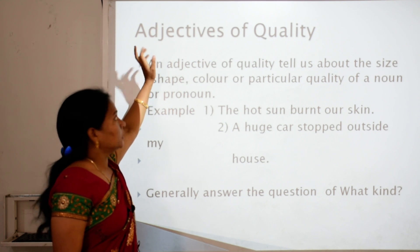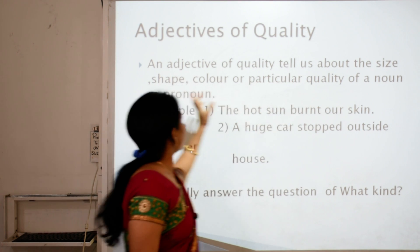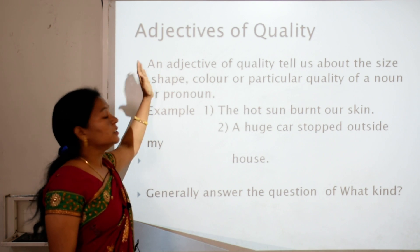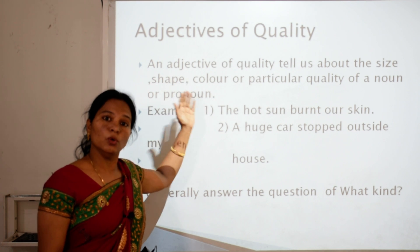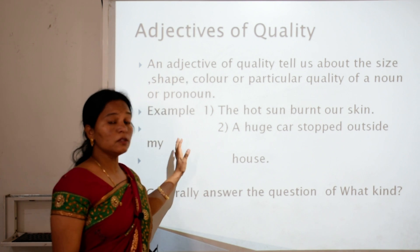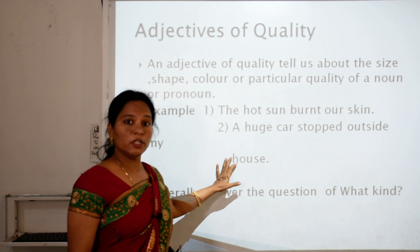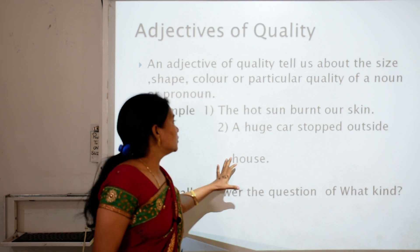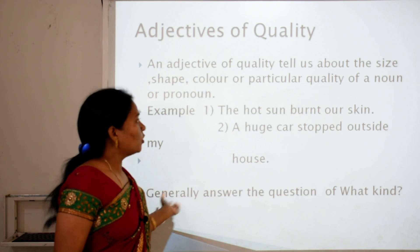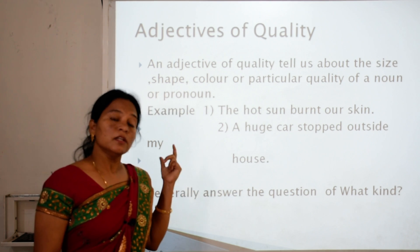Let's look into the first type: adjectives of quality. An adjective of quality tells us about the size, shape, color, or particular quality of a noun or pronoun. For example, 'The hot sun burnt our skin' — the quality of the sun is hot. 'A huge car stopped outside my house' — the quality of the car is huge. Adjectives of quality generally answer the question 'what kind of?' — what kind of sun? Hot. What kind of car? Huge.